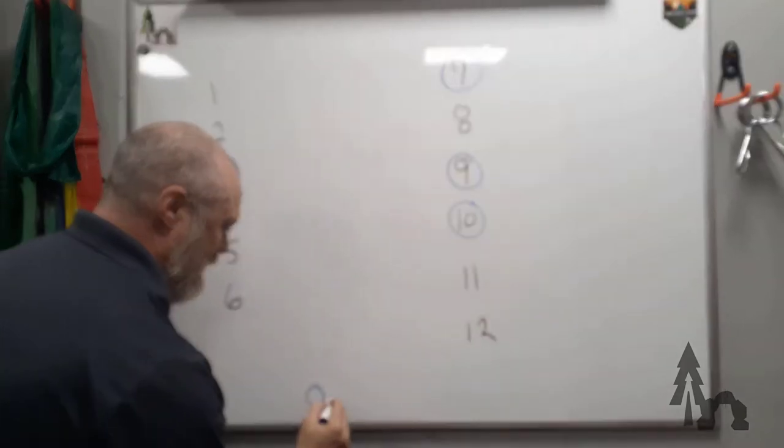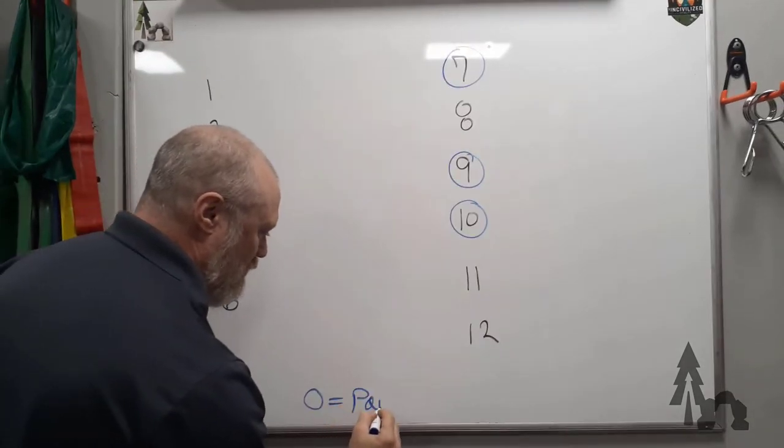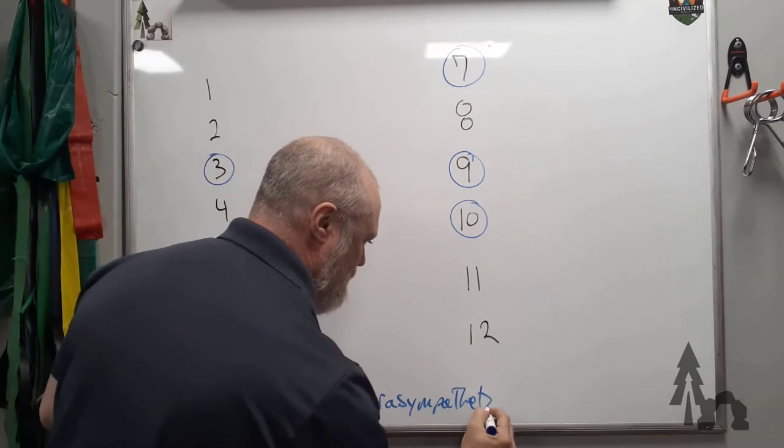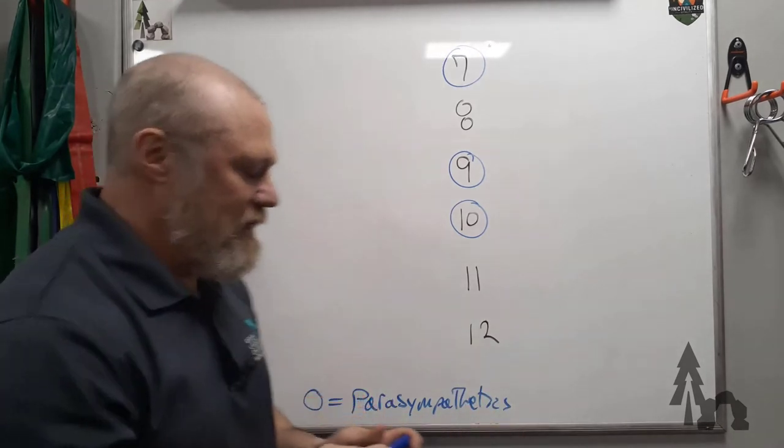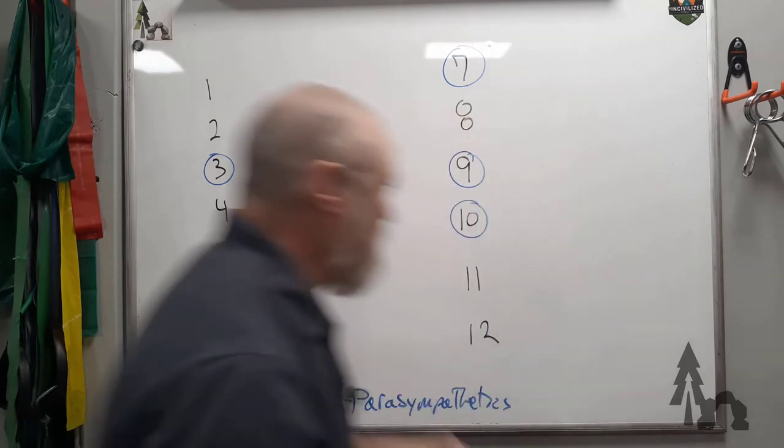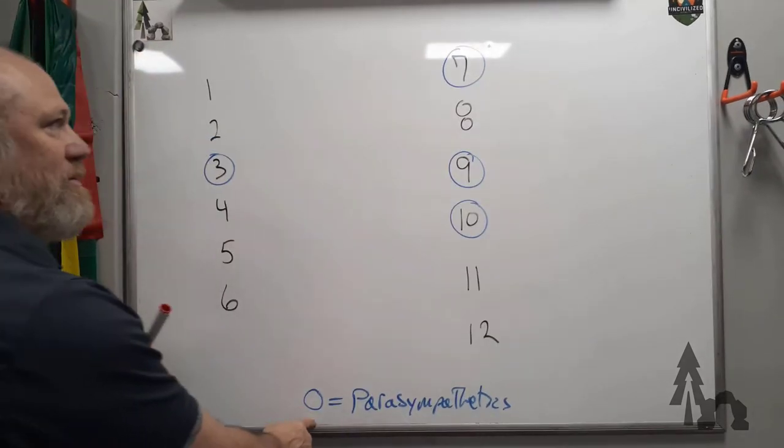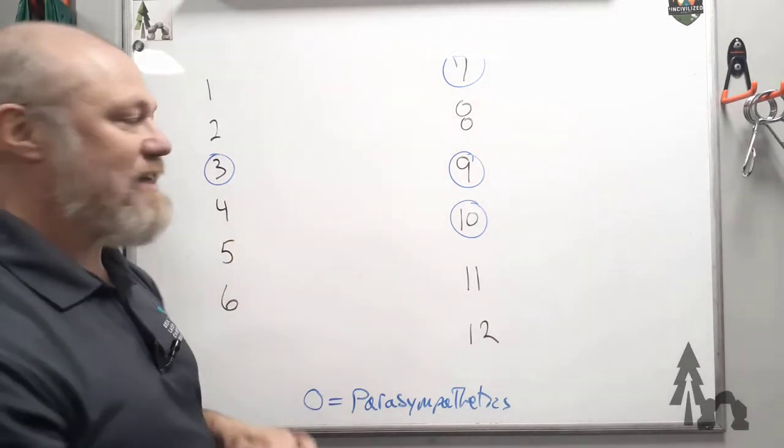Parasympathetics. The next trick to remember is to lay the 12 out—the ones that are circled that carry parasympathetic fibers, 3, 7, 9, and 10.